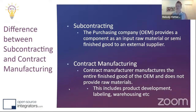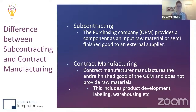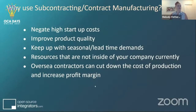In my experience we use subcontracting a lot. It can involve multiple pieces going out to multiple subcontractors — sometimes a subcontractor drop-ships to another subcontractor and then back to the OEM. A key difference: with subcontracting you're sending your own raw material and owned inventory, whereas with contract manufacturing they own all the inventory and just produce the finished good for you.